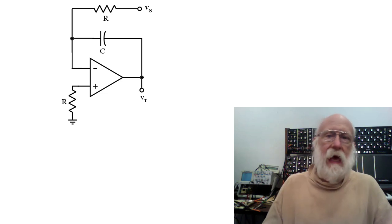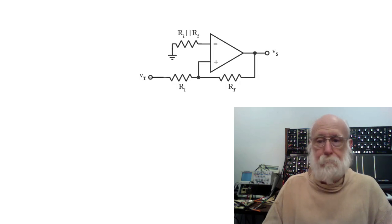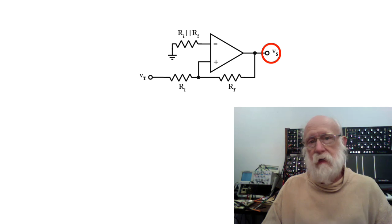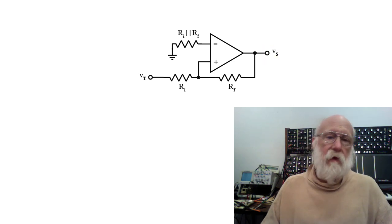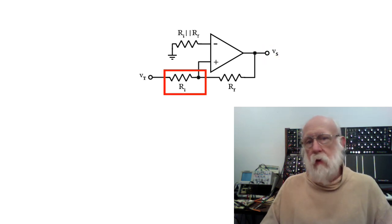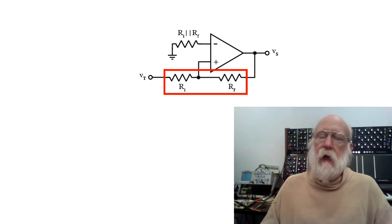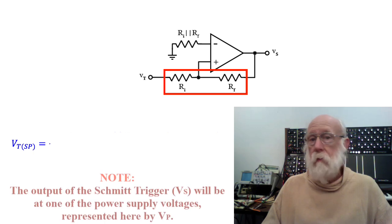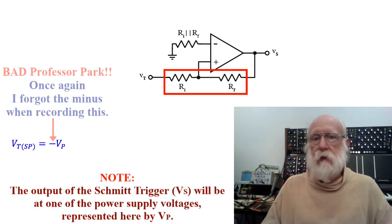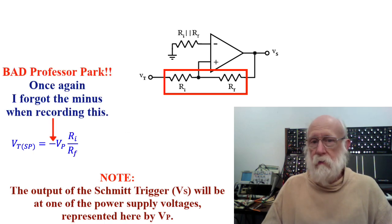Let's put up our next building block, which is a Schmidt trigger. Once again, I have relabeled the input and the output. The input here is called V sub T, the output is called V sub S, and we've got R sub I, the input resistor, and R sub F, the feedback resistor. With those in place, the switch point for the hysteresis is V sub P times R sub I divided by R sub F.